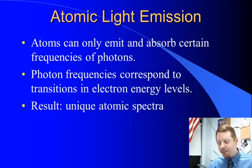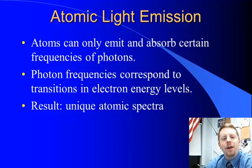Atoms can only emit and absorb certain frequencies of photons. The photon frequencies that are absorbed or emitted correspond directly to the transitions in electron energy levels as electrons jump from one energy level to another. Elements can only give off or absorb radiation in specific frequencies, or when talking about light, in specific colors. This leads to unique spectra for different atoms.